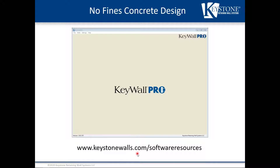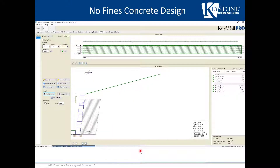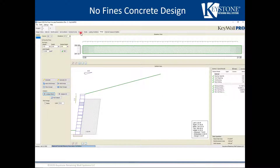No fines applications can be designed using Keystone Keywall Pro design software. If you're not familiar with Keywall Pro, you can visit keystonewalls.com under software resources to download the program; there is a nominal fee of ten dollars. You can also check out PDF resources and webinars on using Keywall Pro. When setting up the design, you input design parameters just as you would for a geogrid reinforced design: design criteria, wall unit type, reinforcement type, soil conditions, any extreme events, and wall profile or station.